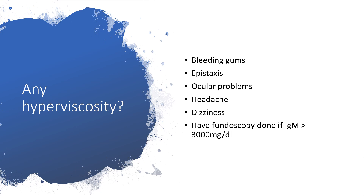Remember, WM means Waldenström macroglobulinemia. So when there is hyperviscosity, we want to find out any bleeding gums, epistaxis, visual problems, headache, dizziness. And have we done the IgM — is it greater than 3000 mg per dL? If that is the case, we need to have fundoscopy done.